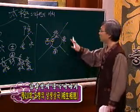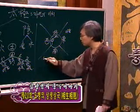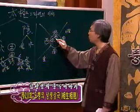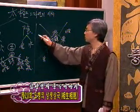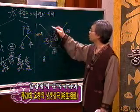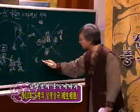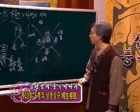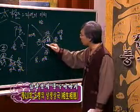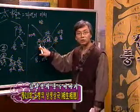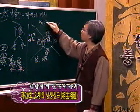동쪽에서 해가 뜨니 아침이고, 남쪽은 무더운 낮, 토는 오후, 서쪽은 저녁, 북쪽은 밤이 될 것이다. 계절로는 동쪽이 봄, 남쪽이 여름, 가운데(토)가 가장 무더운 장하(성하), 서쪽이 가을, 북쪽이 겨울이 될 것이다.